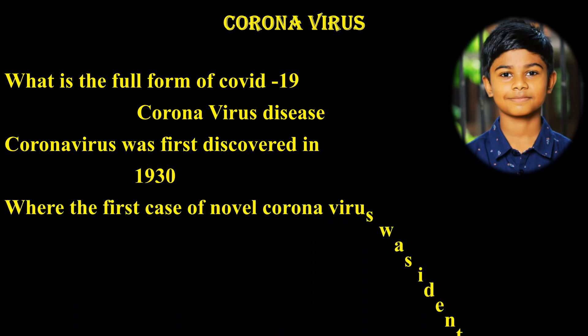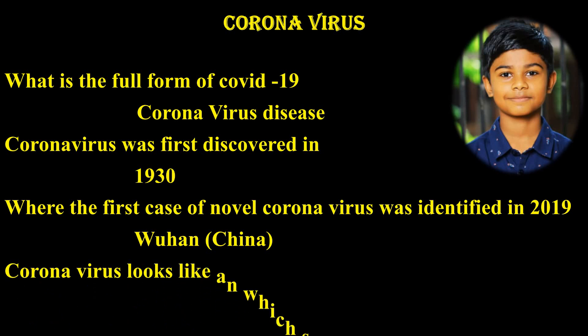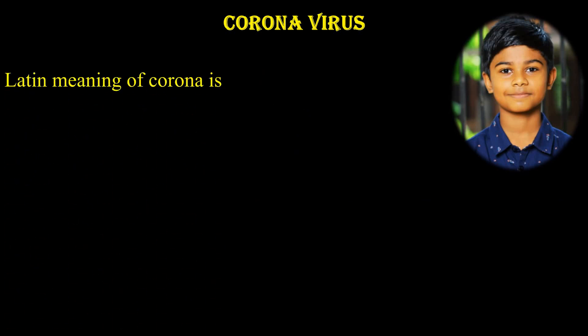The first case of novel coronavirus was identified in 2019 in Wuhan, China. What does coronavirus look like in shape? It looks like a crown. The Latin meaning of corona is crown.